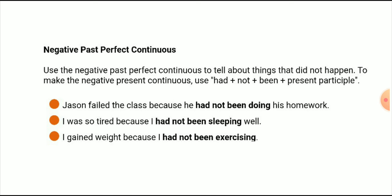Negative past perfect continuous: use the negative form to tell about something that did not happen. To make the negative, use 'had' plus 'not' plus 'been' plus present participle. Number one: 'Jason failed the class because he had not been doing his homework.'